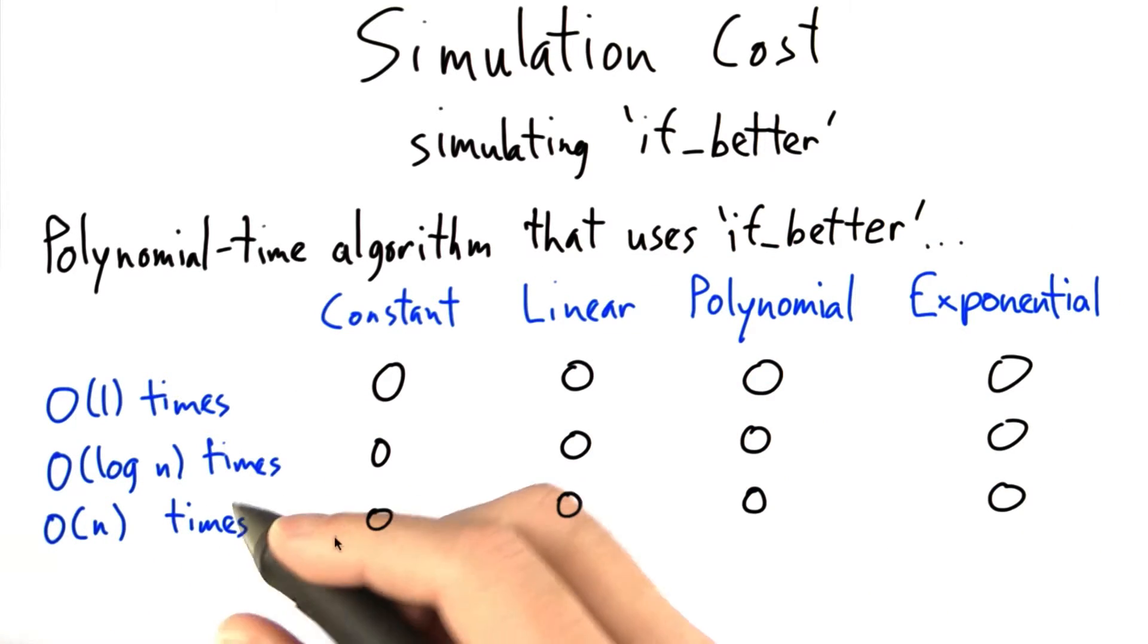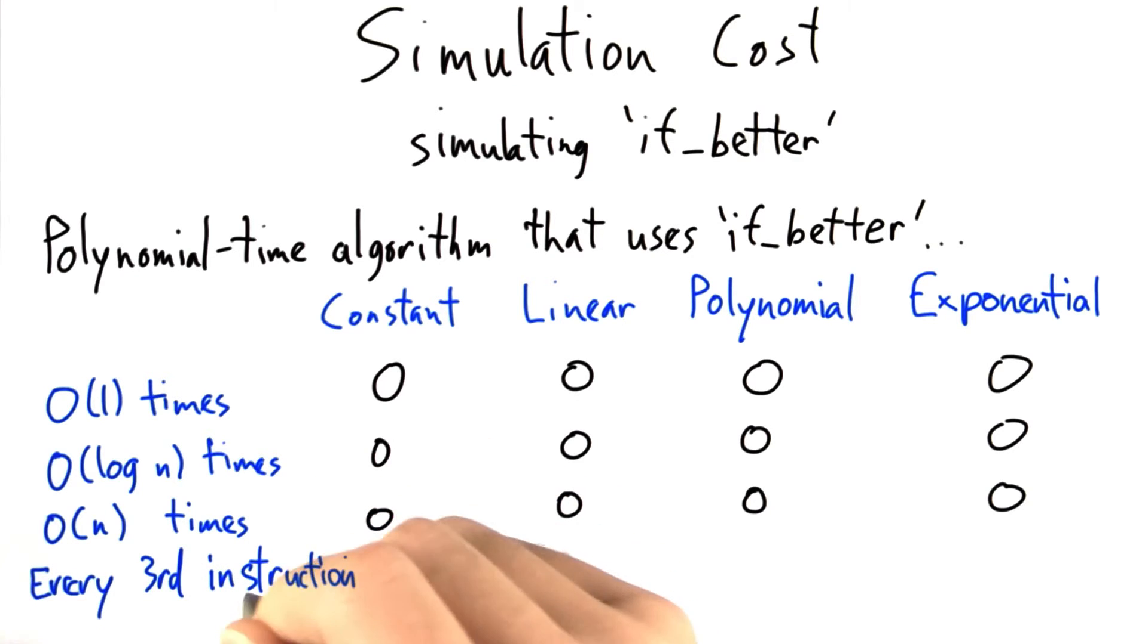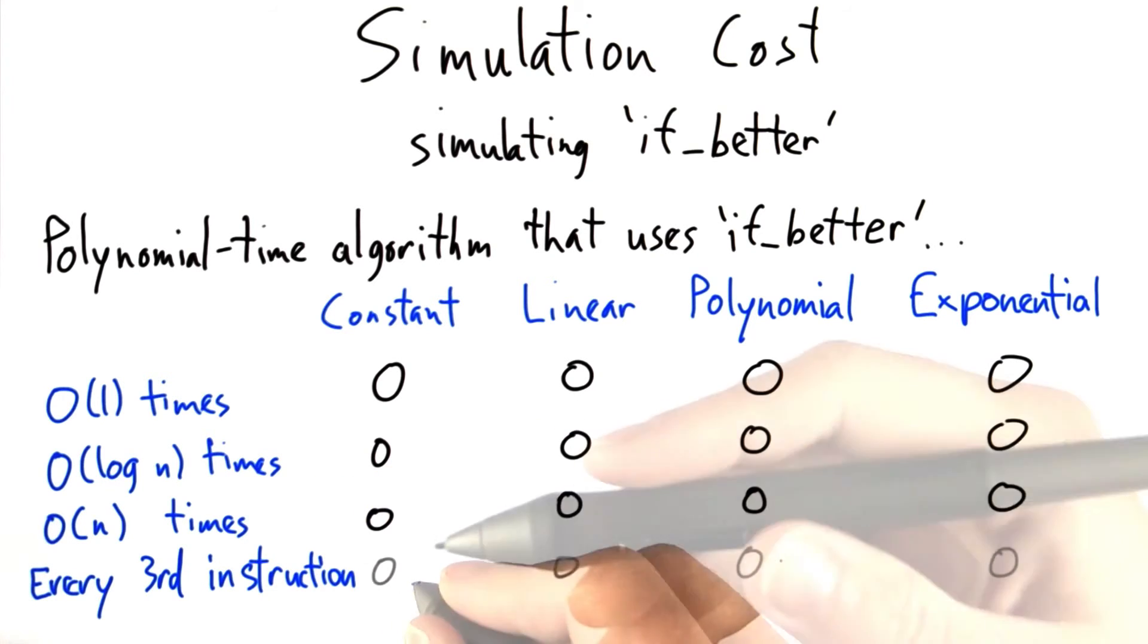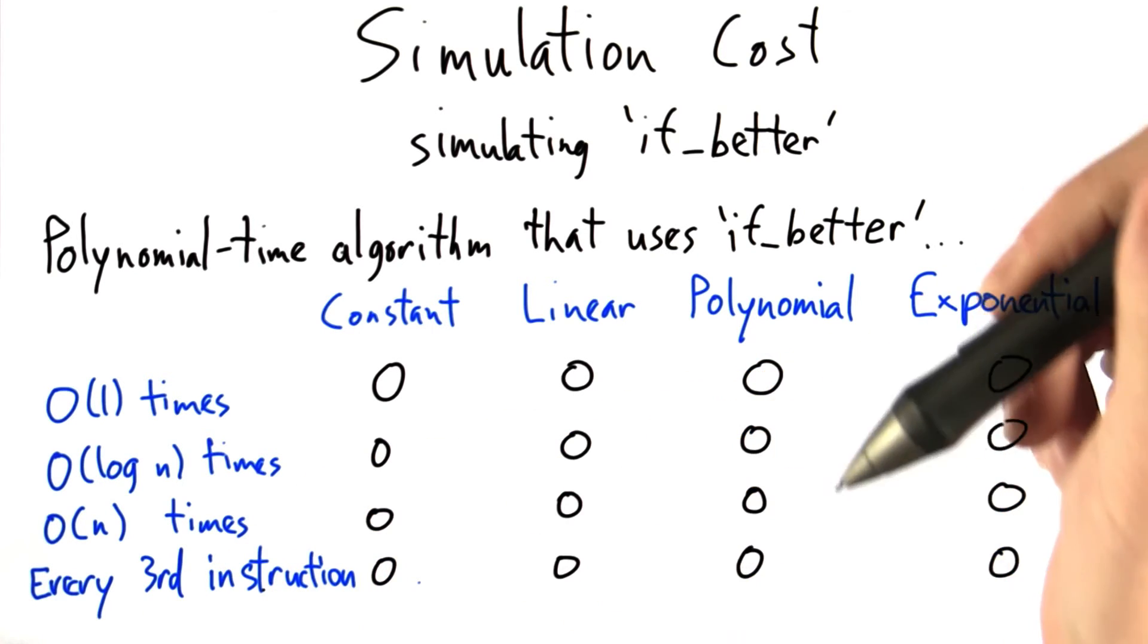And just for kicks, let's do something a little bit more challenging. How about if we use the if-better command every third instruction in the execution? Then how much time does the simulation cost us?